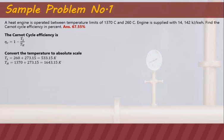Based on the given, our TL equals 260 degrees Celsius. It is important when using the Carnot cycle efficiency to convert the temperature to absolute scale, so we add 273.15. This gives us TL equals 533.15 Kelvin and TH equals 1,643.15 Kelvin.